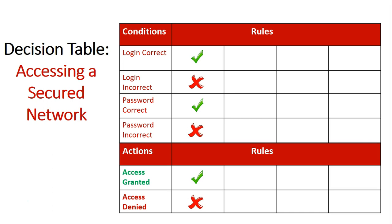Can you see how it all lines up in columns? The conditions column, with certain factors being true, leads to a specific action being true. In this scenario, this is the only scenario that will grant access to a user getting into a secured network. All other combinations where the login is incorrect or the password is incorrect lead to the access being denied.